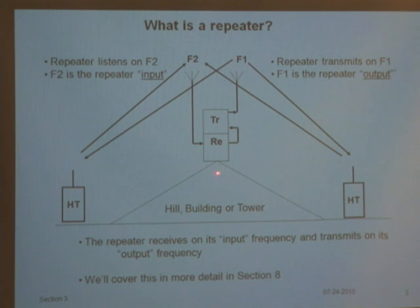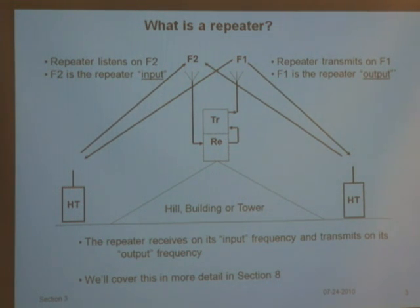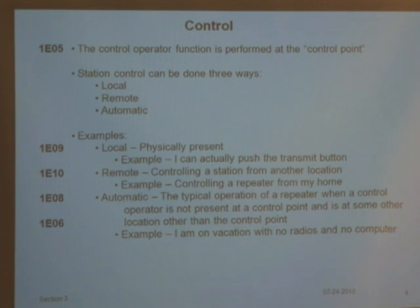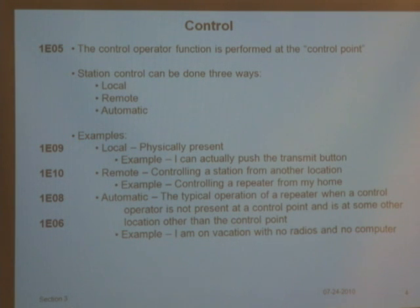We'll cover more about repeaters in Section 8, but essentially that's what a repeater is. When repeaters came into the world, a whole bunch of things changed regarding control operators. The control operator functions are performed at the control point — the place where you touch the button. Stations can now be controlled three ways: locally, remotely, and automatically.